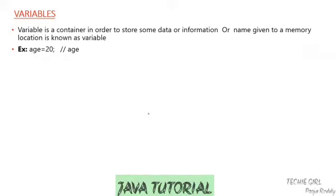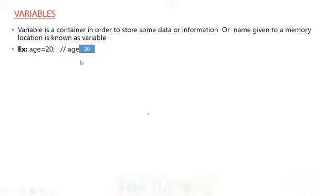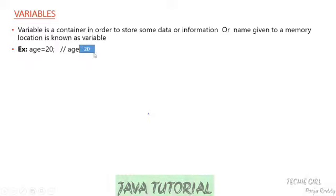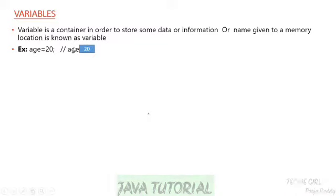Here you can see 'age' is a variable name that I am considering to specify my memory location. The value 20 is stored somewhere, and that memory location is specified with the name 'age'.